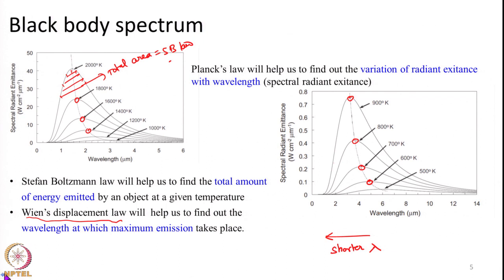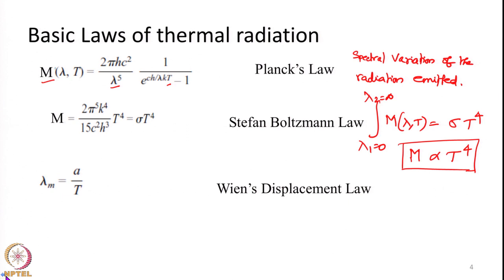In this slide the basic equations for the three laws are given. The first is the equation for Planck's law, the second for Stefan-Boltzmann law, and the third for Wien's displacement law. Lambda_m, the wavelength corresponding to peak radiation from an object, is given by a/T. From the three laws we can find the spectral variation of emitted energy, the total amount of energy, and the wavelength of maximum radiation.